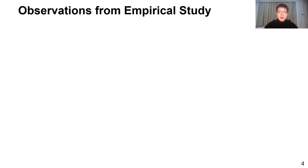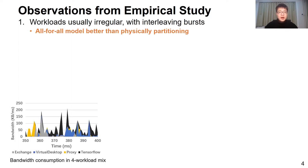We performed experiments to study these problems at three levels: workloads, software, and devices. First, workloads have intermittent I/O. When we put them together, their I/O bursts often interleave with one another, as shown here with four sample workloads. It suggests that rather than physically partitioning a large disk pool to serve different concurrent workloads, we should go for an all-to-all model, where more disks could serve the biggest applications at the time.